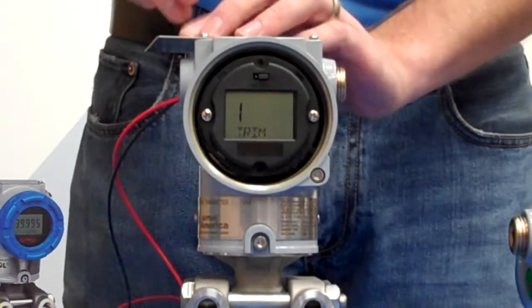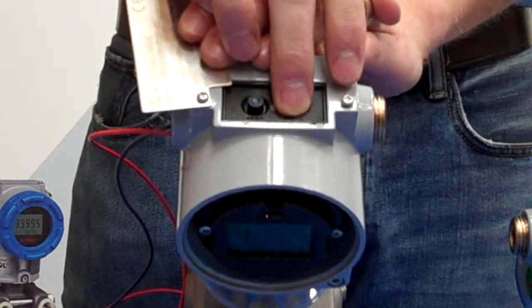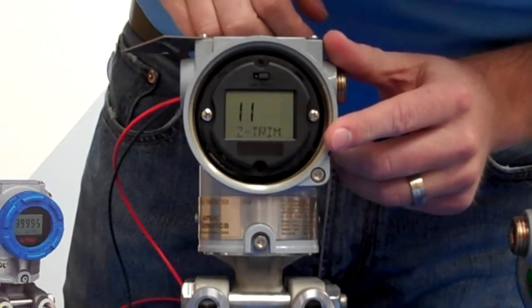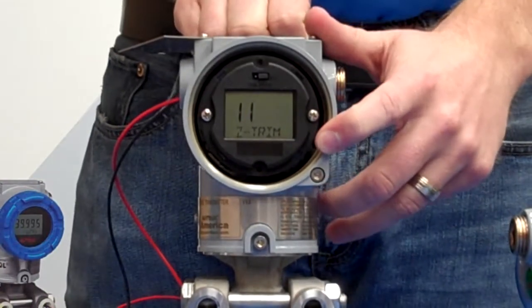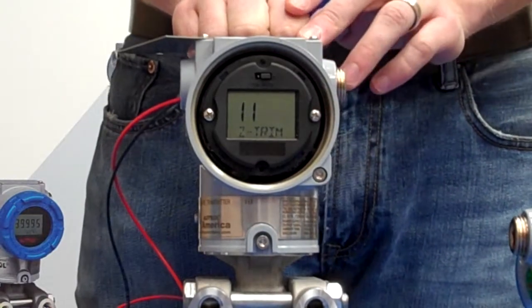Now to access the sub-menu Z Trim, we will push and hold the span button, wait for the change on the display, and release. This is going to enable us to access the zero trim function, which is what we have described here earlier.